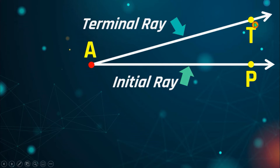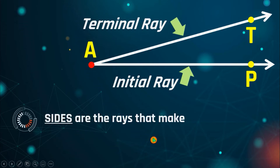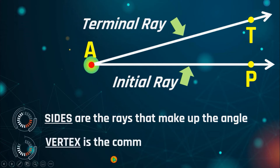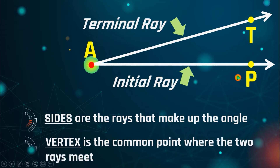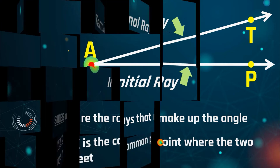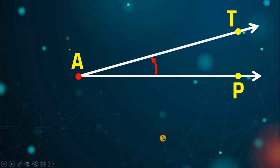The terminal ray is the side that keeps on moving or rotating. As it rotates, the angle becomes larger and larger. Each time the terminal ray moves, it creates different kinds of angles — and that is what we are going to study today. These sides are the rays that make up the angle, and the common point where the two rays meet is called the vertex. An angle cannot be called an angle if it has no vertex or only one ray — you need two sides and one vertex with a common endpoint.